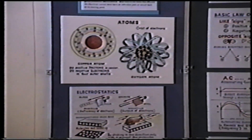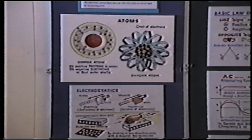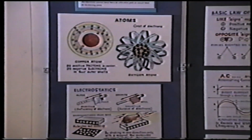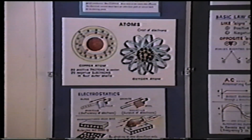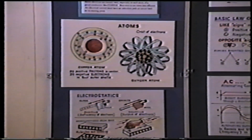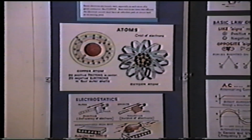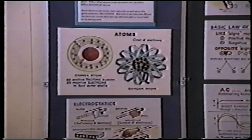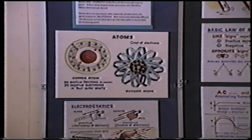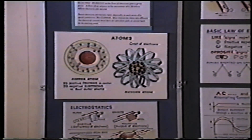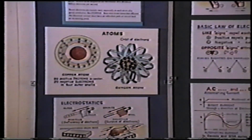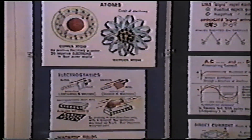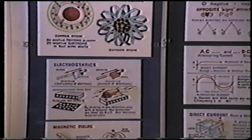Good conductors such as silver, copper and aluminum have loosely held electrons, while an ion has ten times more resistance to the flow of electrons. The following panels show the methods of generation of electricity.